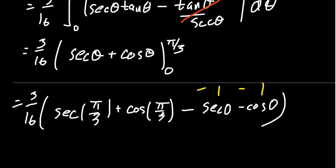Cosine of pi-thirds, that turns out to be a 1-half. That one you might have memorized from your unit circle diagrams. And then secant, which is the reciprocal, will be a 2. So we get 2 plus 1-half, minus 1, minus 1. The minus 1s cancel off with the 2. So we have 3-sixteenths times 1-half. And gives us the final area, which is 3 over 32.